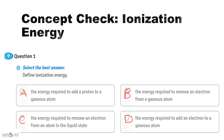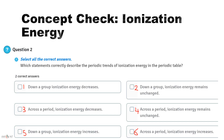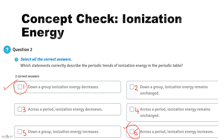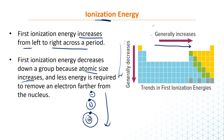What is the definition of ionization energy? Stop the video and come back. The answer is: the energy required to remove an electron from a gaseous atom. Which statements correctly describe the periodic trends of ionization energy? Down a group, the energy decreases; across a period, the ionization energy increases. This is what we saw in the graph.